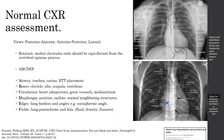For chest x-ray assessment, you should first note the view — whether it's posteroanterior or lateral. After that, you need to assess the rotation by checking the distance between the medial clavicular end and the spinous process in the middle, which should be equal from both sides.